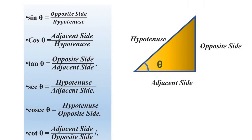Let's start trigonometry. We are going to start with the right angle triangle. When we consider this angle, this side is the adjacent side, this side is the opposite side, and the side opposite the 90 degrees is the hypotenuse.